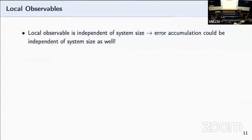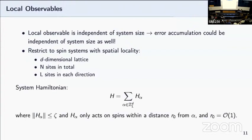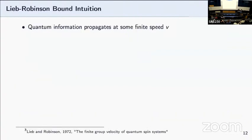Next, we're also very interested in tasks that have observable values that scale independent of system size, because these are tasks that analog quantum simulators can conceivably run in the near term. One task of interest is the local observable, because itself is independent of system size. This is how we set up our local observable setting. We consider a spin system with spatial locality on a d-dimensional lattice, with n size in total and l size in each direction. The system Hamiltonian we use is a summation of local terms, where each local term is bounded by some constant and acting on spin on qubits within a certain distance of some center.